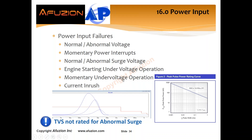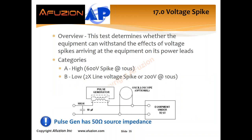Voltage spike, section 17, determines whether your equipment can handle spikes arriving on its power inputs or power leads. It breaks into two categories: section A — a 600-volt spike at 10 microseconds — or section B — two times your line voltage or 200 volts at 10 microseconds. The key is that it lasts 10 microseconds, which is a pretty short amount of time, and the pulse generator has a source impedance of 50 ohms. This test is going to be less severe than section 22 induced lightning and doesn't need to be analyzed by itself.